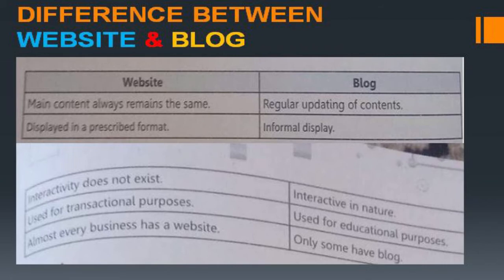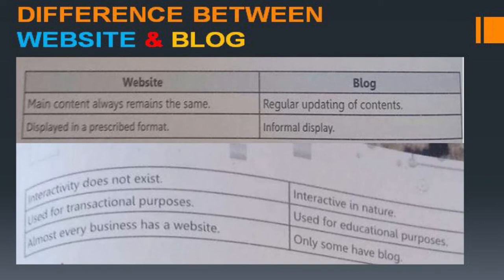Differences between a blog and a website: a website's main content always remains the same, while a blog is regularly updated. A website has a formal display format, while a blog is more informal. A website is not interactive, while a blog is interactive — readers can interact with the blogger. Websites are used for transactional purposes, blogs for educational or personal purposes. Almost every business has a website, but only some have blogs.